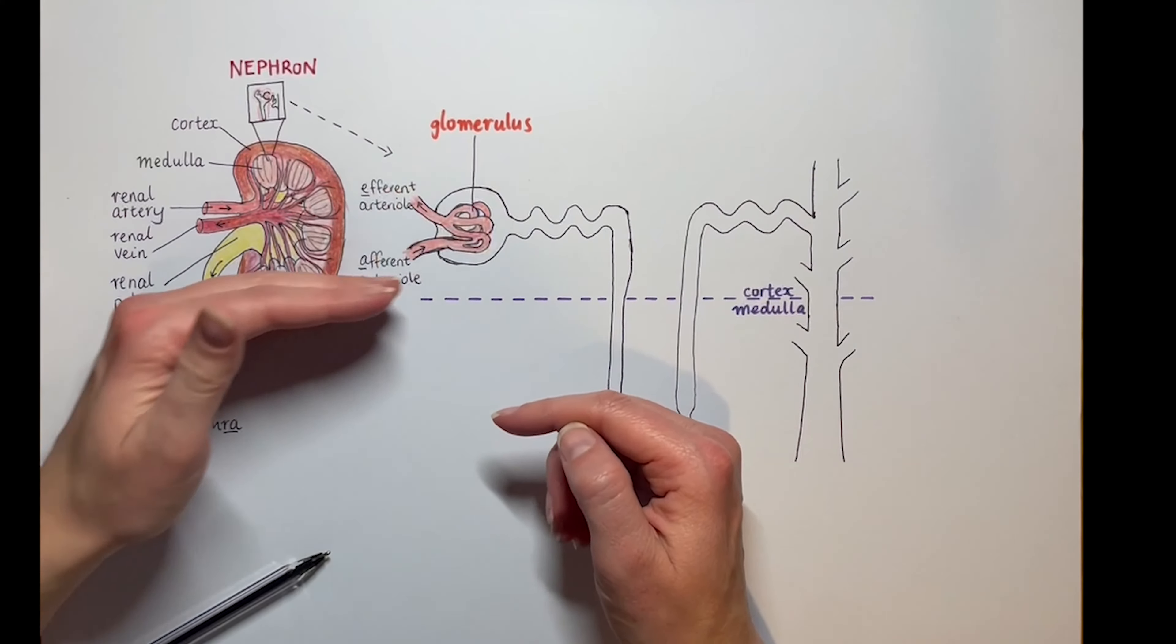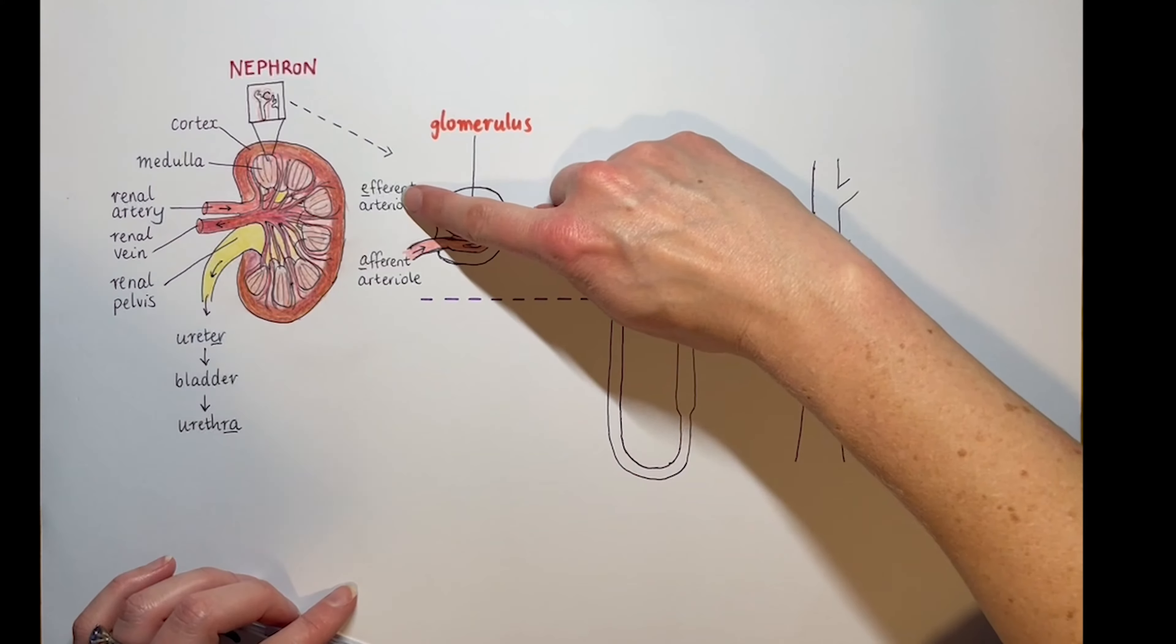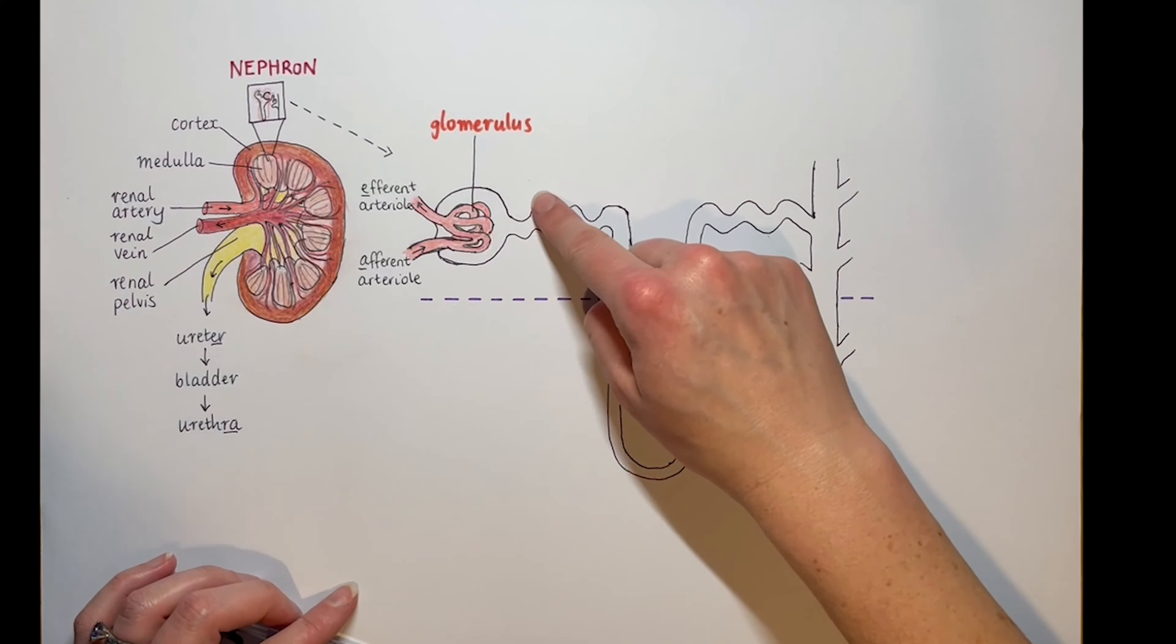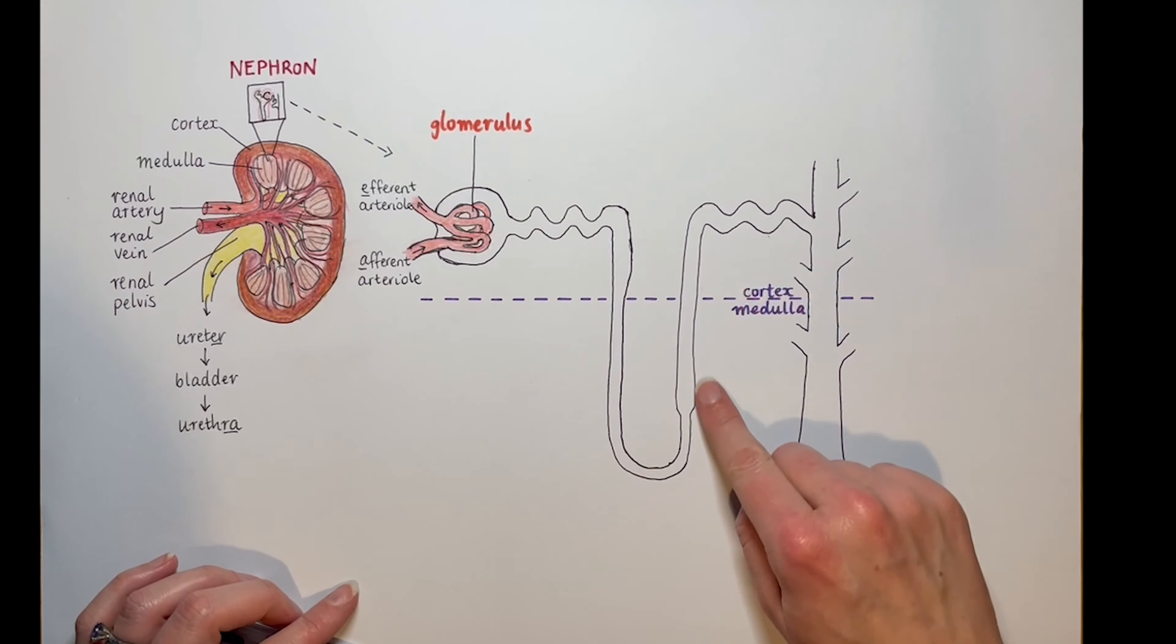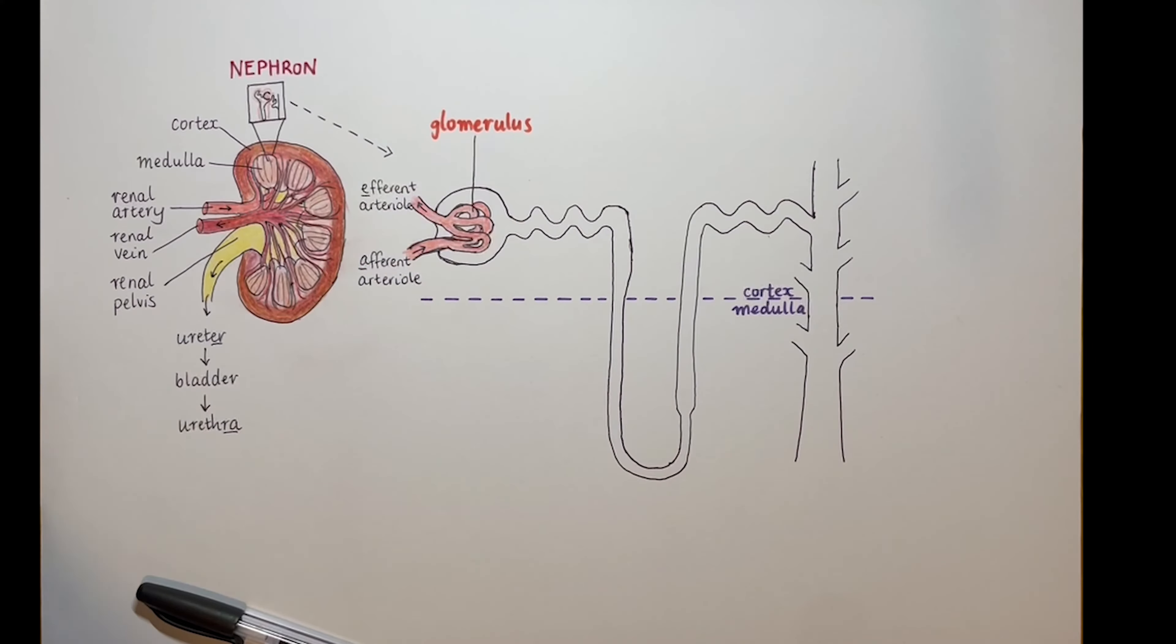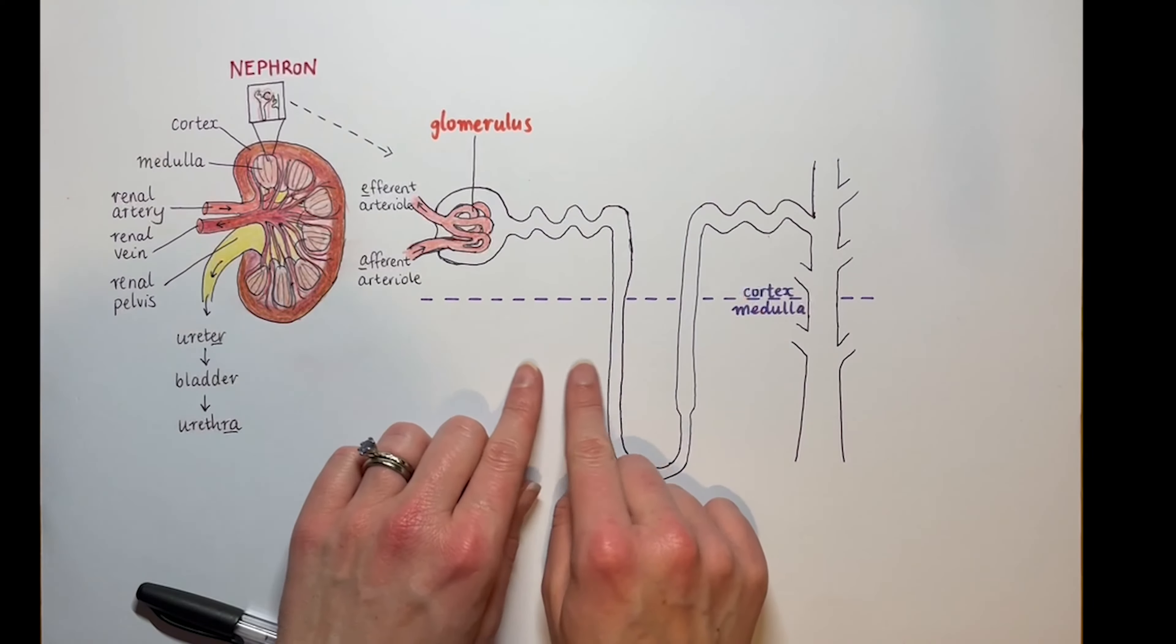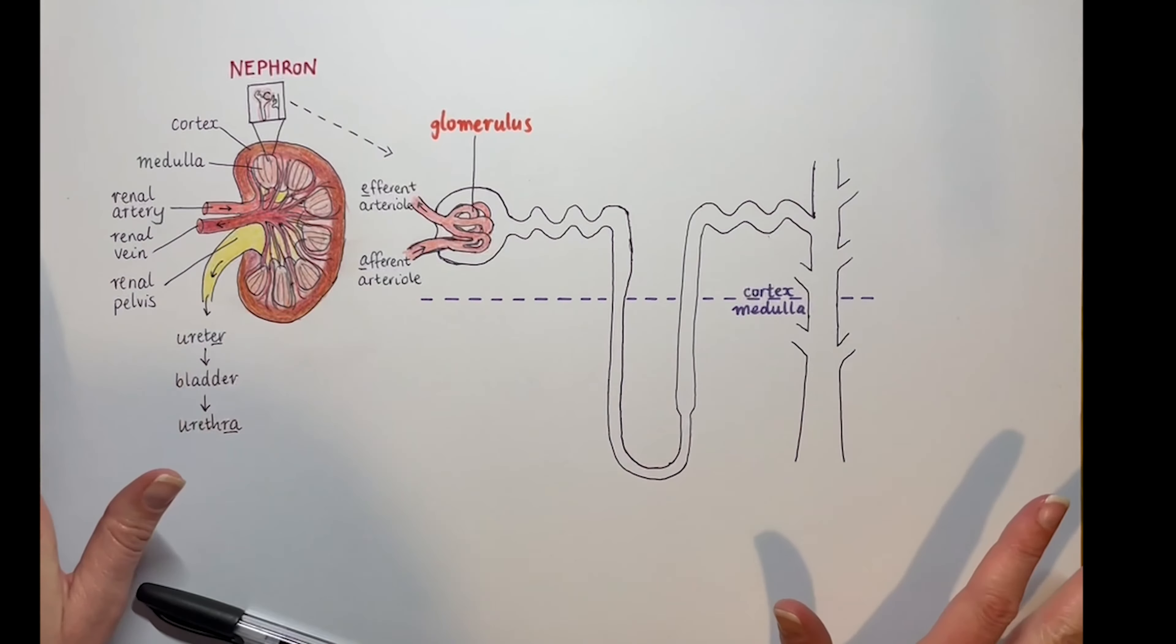The efferent arteriole carries on to peritubular capillaries around the convoluted tubules up here and the vasa recta down here before returning to the renal vein. But you don't need that level of detail. The blood network is in close proximity to the rest of the nephron so substances can be returned to the blood, but I'm going to leave them off our diagram so it doesn't get too messy. Just know that lots of the things that come out, that move out of our nephron here, eventually make their way back into the blood.